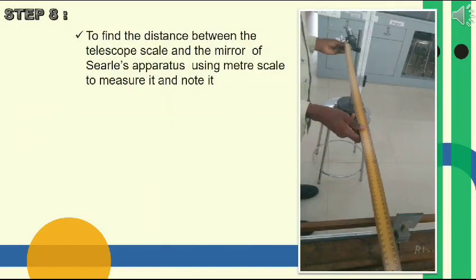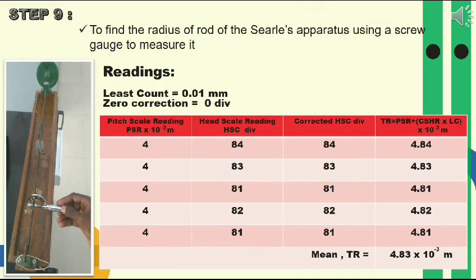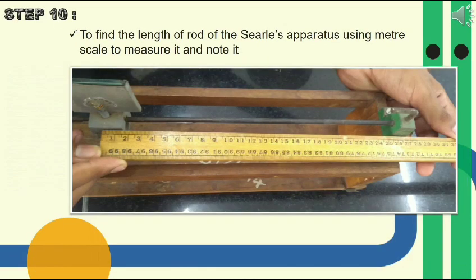The distance between the telescope scale and the mirror of Sewell's apparatus is measured using a meter scale. Using the screw gauge, find the radius of the rod. The length of the rod from the fixed point is measured using a meter scale.